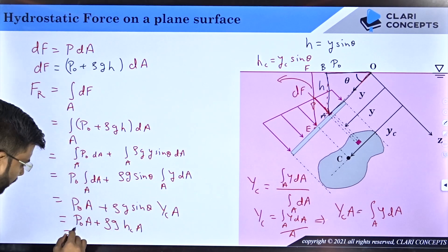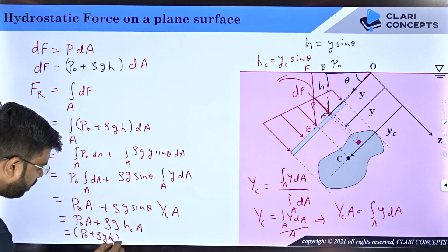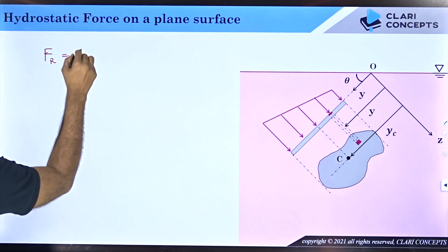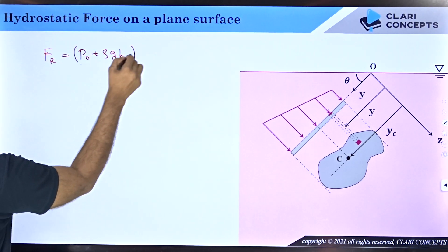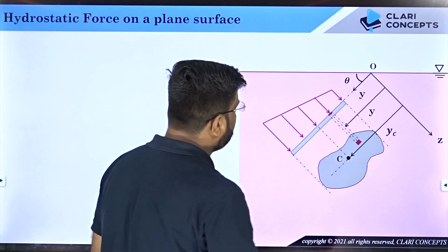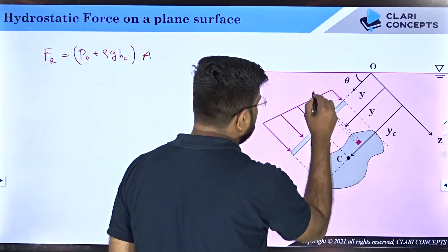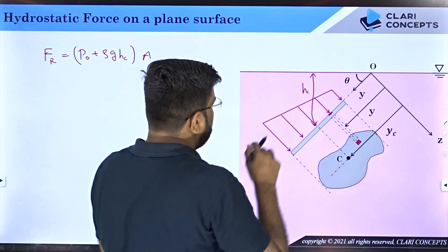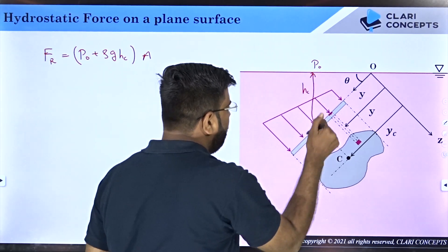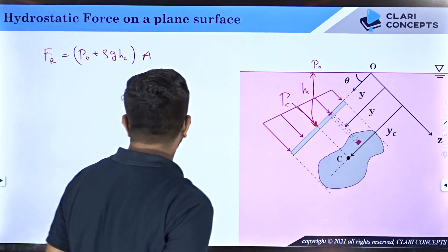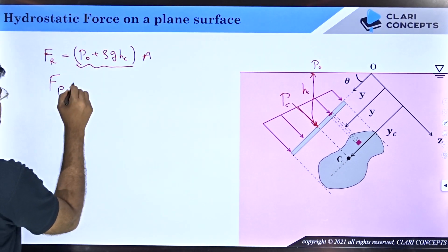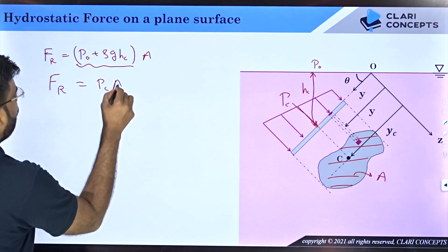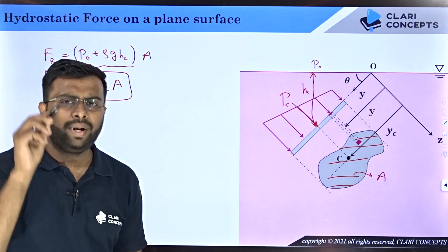Taking area A as common: FR = (p₀ + ρg·hc) · A. The term p₀ + ρg·hc is simply the pressure at the centroid point, which we call pc, since hc is the vertical depth to the centroid. So the resultant force on the submerged plane surface is FR = pc · A — the total area of the plane surface multiplied by the pressure at the centroid point.